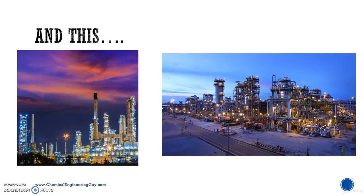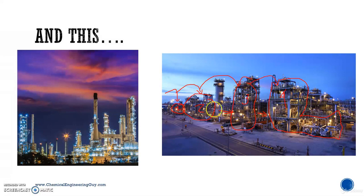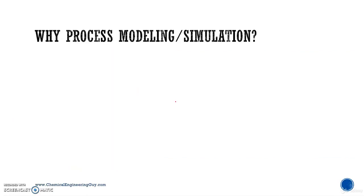Imagine everything changes across multiple units — plant one, plant two, unit three, unit four — where each depends on the previous one. A change in one makes a change in two, which makes a change in three, and so on. So how can we model this without going one by one, modeling by hand? This is why we use process modeling.